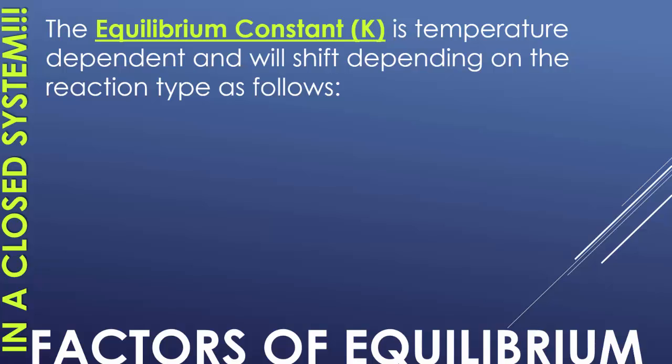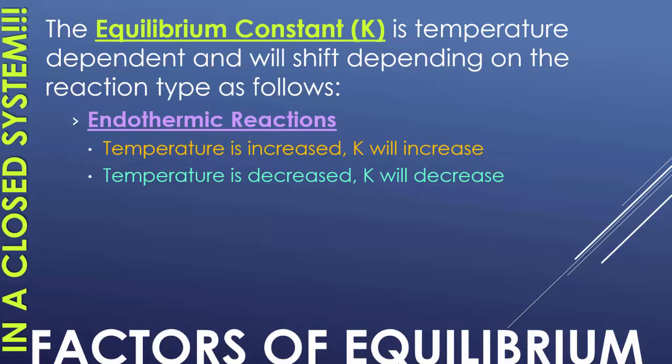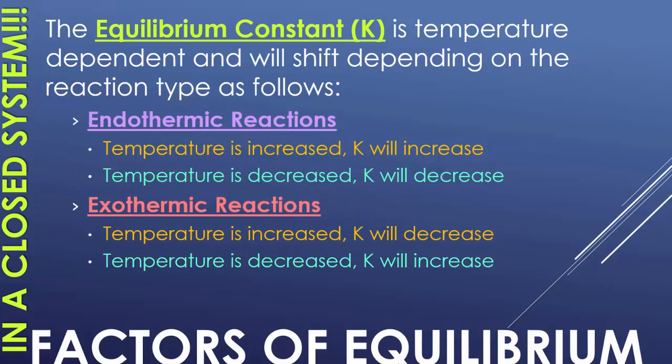The equilibrium constant, K just represents constant. The equilibrium constant is temperature dependent and will shift depending on the reaction type. For endothermic reactions, if there's an increase in temperature, KEQ will increase. If there's a decrease, it will decrease. For endothermic reactions, there's a direct relationship. In an exothermic reaction, there is an indirect relationship. Temperatures increase, the KEQ will decrease. And temperatures decrease, the KEQ will increase.